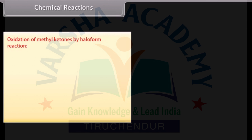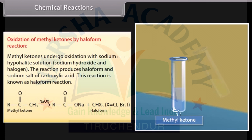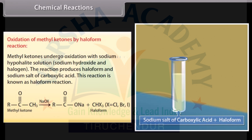Oxidation of methyl ketones by haloform reaction: methyl ketones undergo oxidation with sodium hypohalite solution, that is sodium hydroxide and halogen. The reaction produces haloform and the sodium salt of a carboxylic acid. This reaction is known as the haloform reaction.